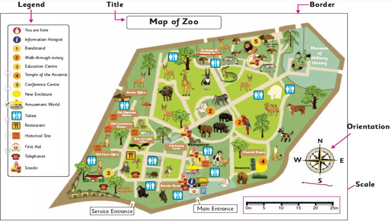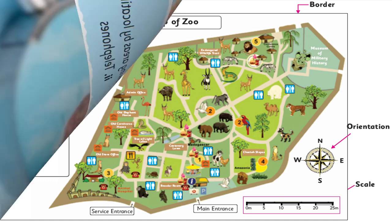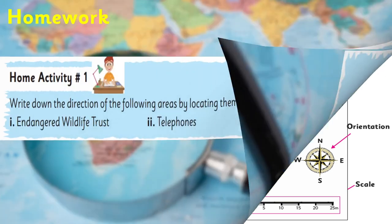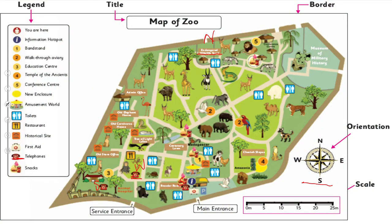Here is the map of the zoo. First, find the Endangered Wildlife Trust — here it is, and just by looking at the directions, it is on the north of the zoo. Next, find the telephones — here is a red one, here is the telephone. It is in the southwest of the map, or you can say it is in the west. There are also telephones in the south of the map. Then find the information hotspot — here is the notation for information hotspot. It is in the south of the zoo.